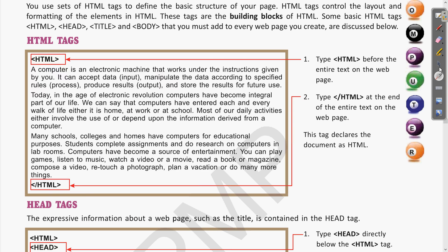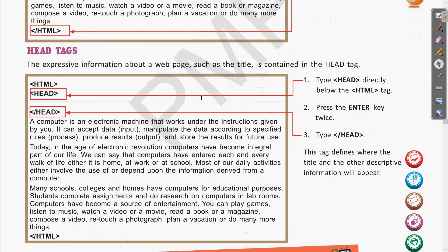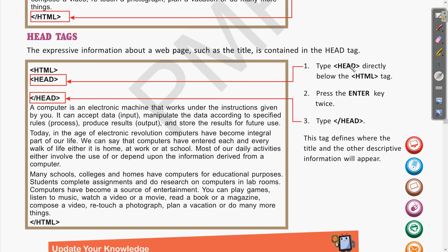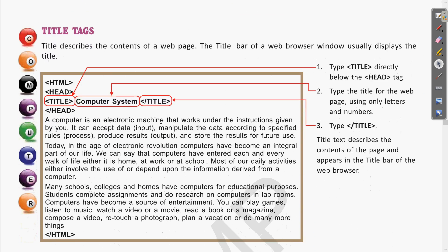The closing tag is written with the forward slash. After the HTML tag, we write the heading tag. Heading tags are those tags which are used to give the basic information of the web page, for example the title. This title will be written within the head tag. After the HTML tag we include the head tag, so the tag name is 'head'.